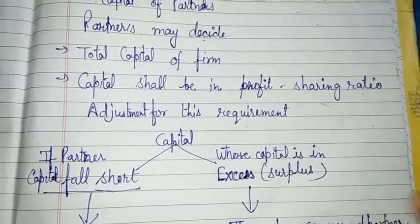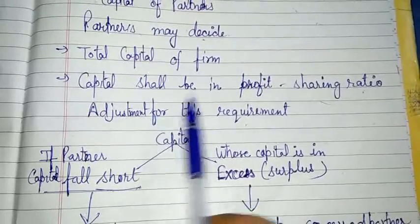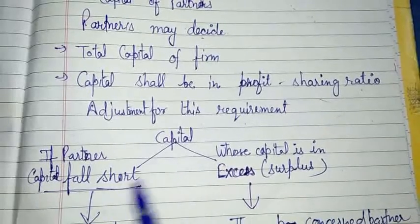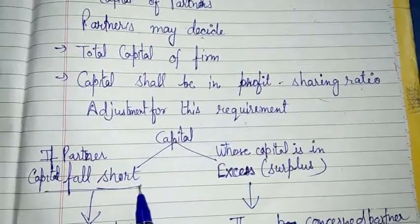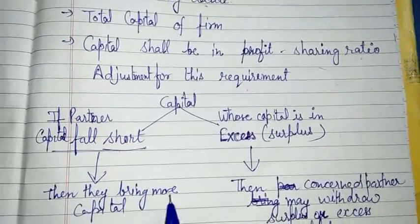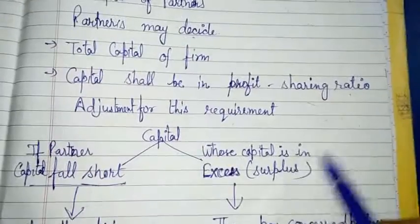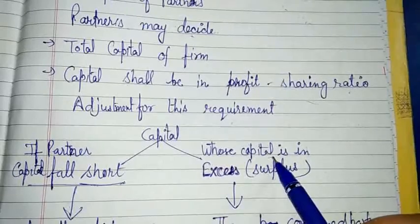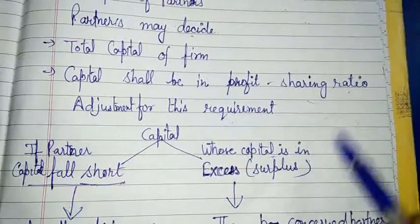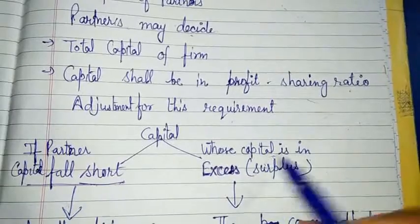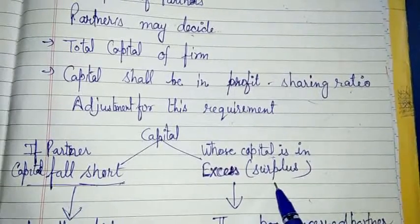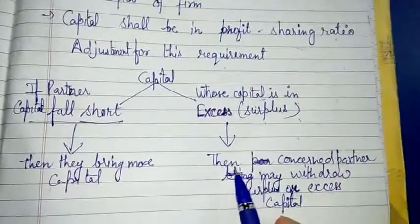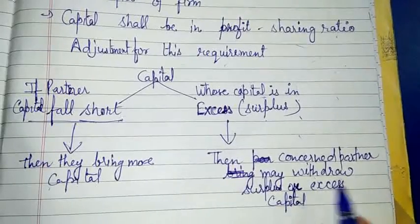किस partner की capital में कुछ cash की shortage आ रही है, किस partner की capital account में कुछ surplus या excess amount हो रही है। जब भी हम capital account के through adjustments करते हैं, अगर कोई capital की shortage हो रही है तो partner कुछ और capital invest करेगा। और अगर adjustments के बाद capital में कमी हो जाती है तो उसकी capital थोड़ी बढ़ जाती है।